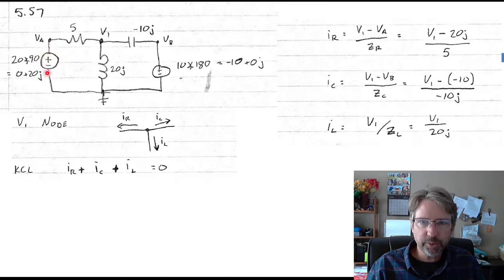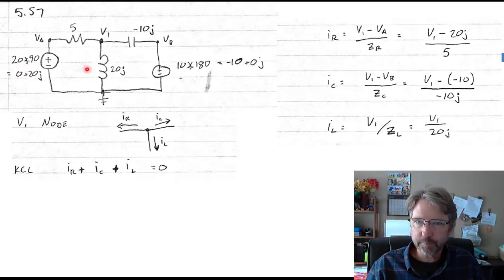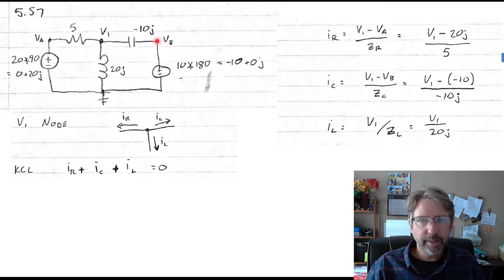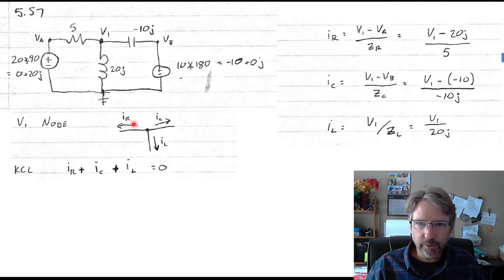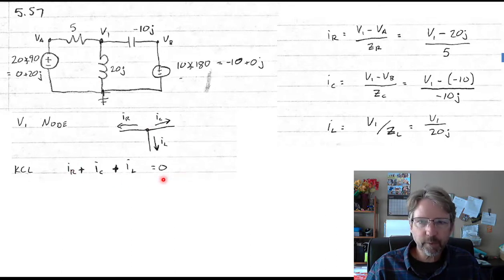This node has to be 20 with a phase of 90. Over here we've got a voltage source so this node is known, and so the only unknown node voltage is V1. For each unknown node we write Kirchhoff's current law. Here we're going to do all the currents going out, so IR, IC, and IL up here have to sum to zero.